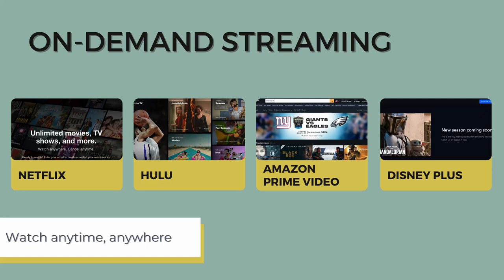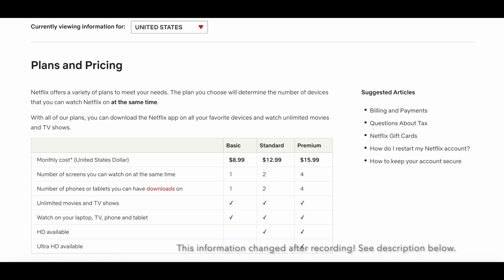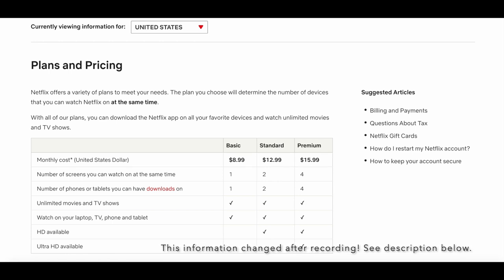Netflix is not the option to pick if you want to watch current episodes of your favorite television shows. The best you're going to do is previous seasons, which you can absolutely binge watch, but it's not going to have next-day episodes of something that's currently airing. Netflix does have different price tiers, and those will reflect the number of screens on which you can watch simultaneously — remember, we talked about streams — and it will reflect the video quality for those streams as well.